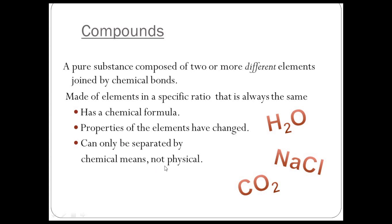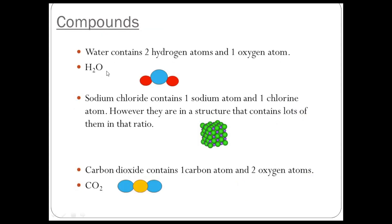What that means is it's difficult to separate them. You couldn't filter it, or you couldn't boil it to evaporate one of the substances. Water contains two hydrogen atoms and one oxygen atom, so it's that ratio. Sodium chloride contains one sodium and one chlorine atom. And carbon dioxide contains one carbon and two oxygens. Now notice that the single atom—O in this case, C in this case—is in the center.